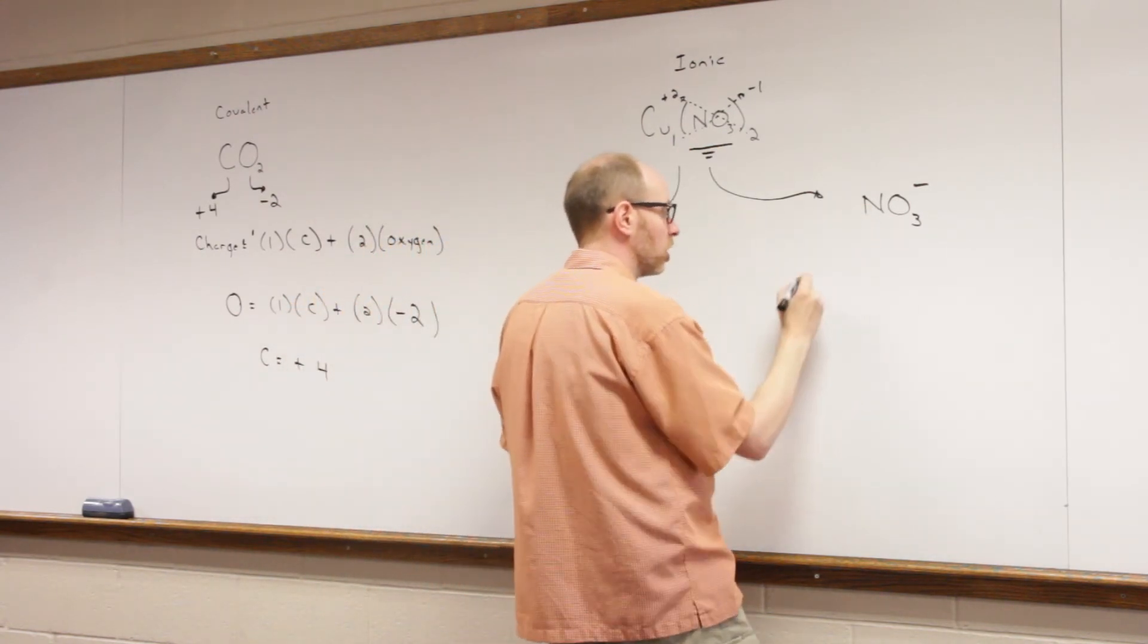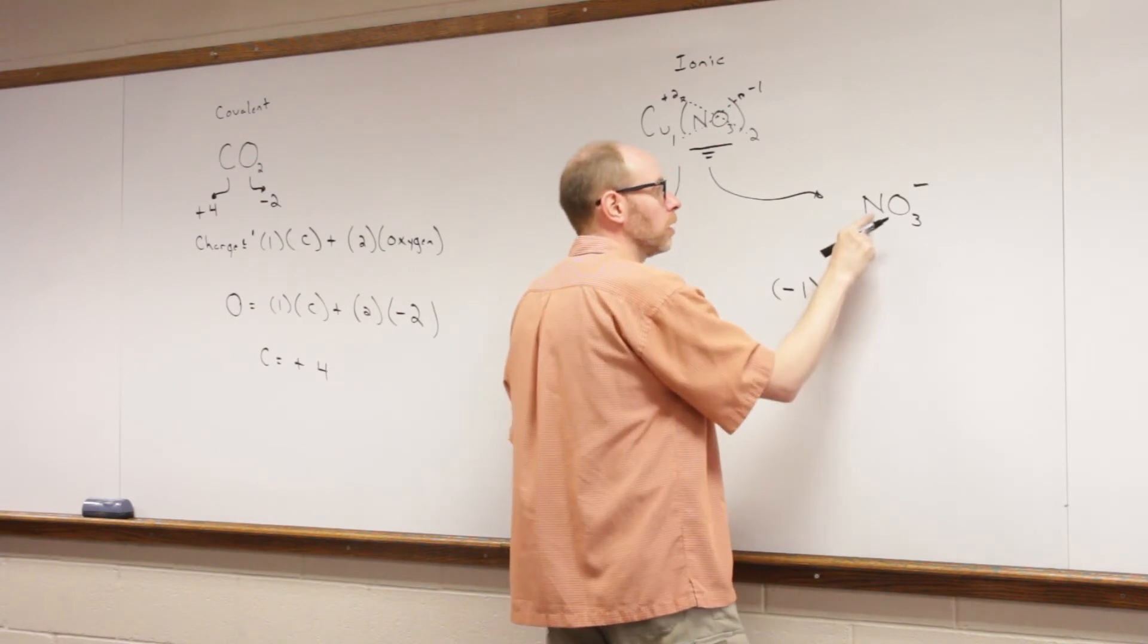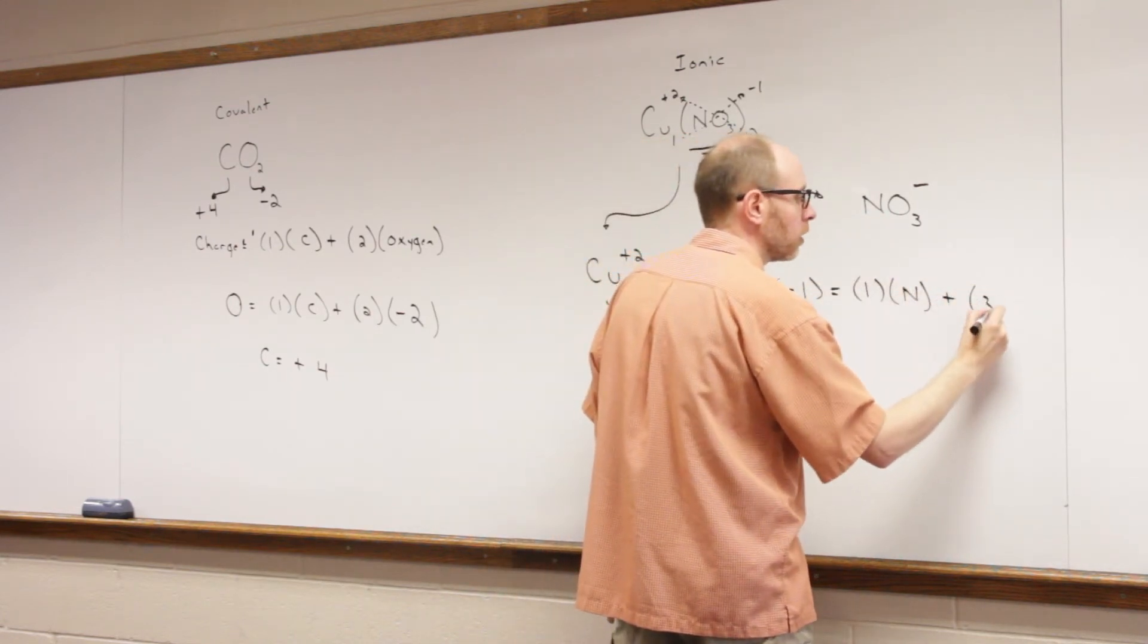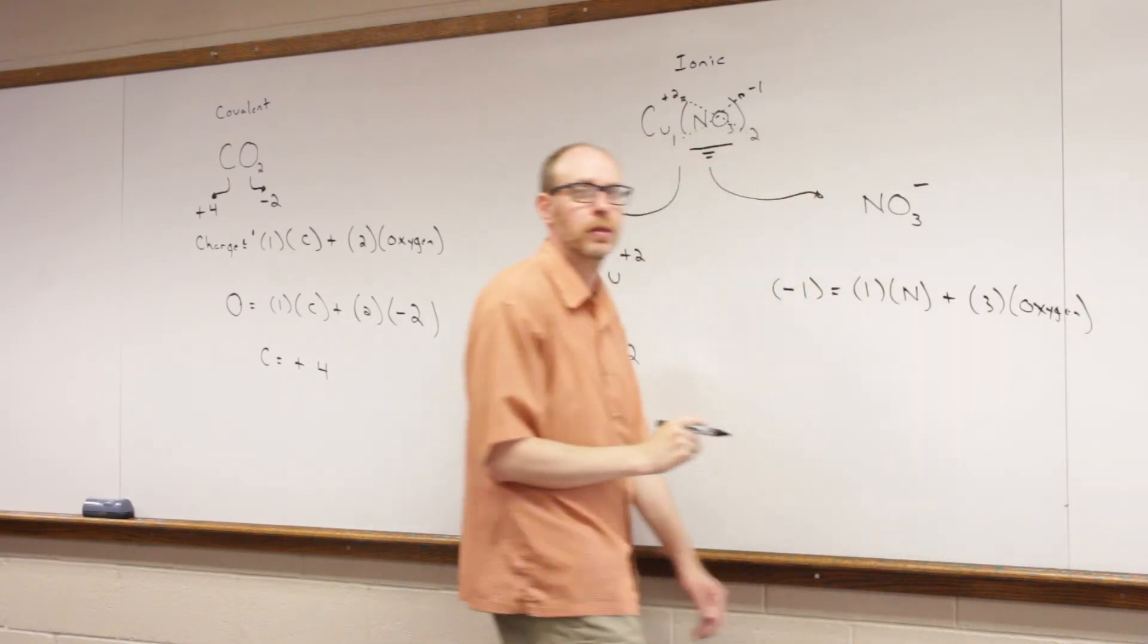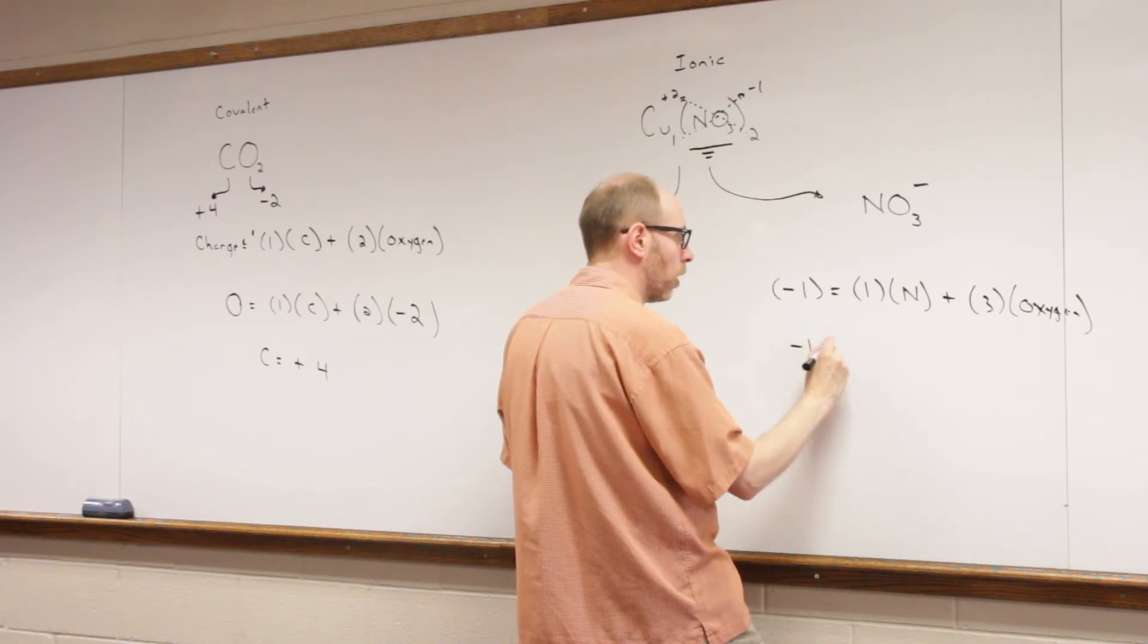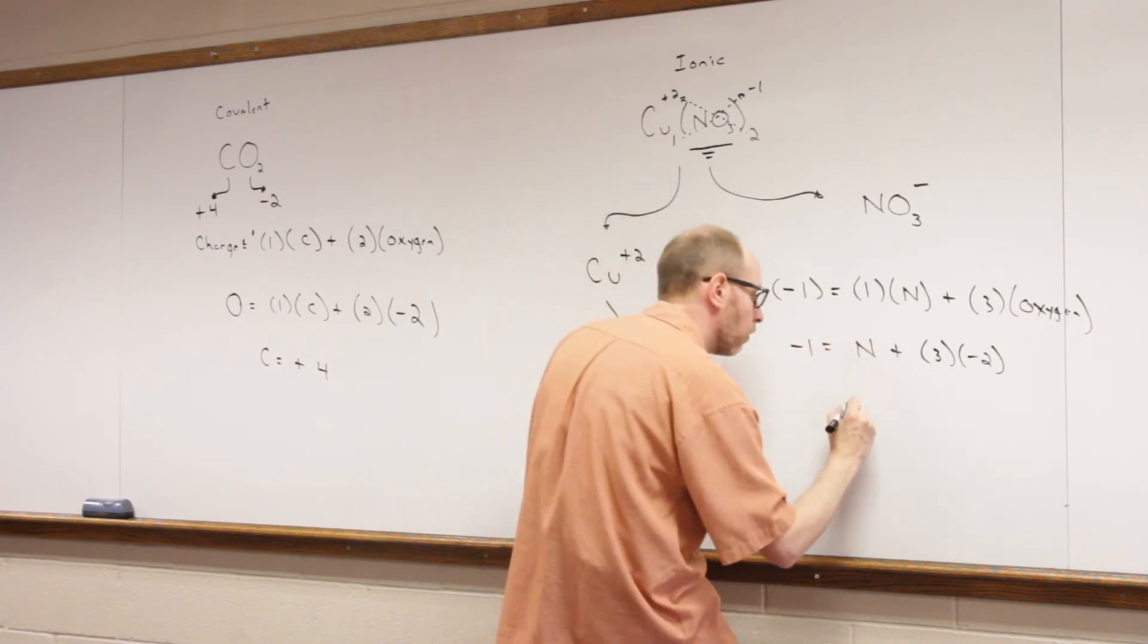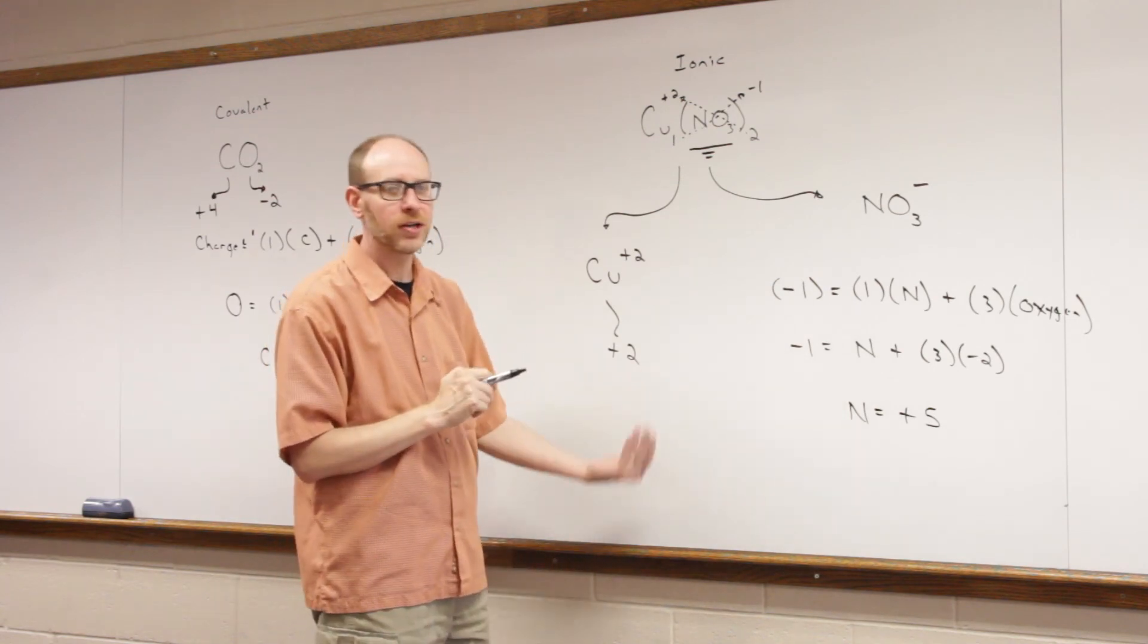So, in this case, we say the charge of that ion is minus 1, and that's equal to 1 times whatever nitrogen is, nitrogen, there's only one of them, plus 3 times whatever oxygen is. Remember we also said oxygen is always a minus 2, so minus 1 equals N plus 3 times a minus 2, because oxygen is always a minus 2 in the cases we're going to look at. And when you solve that, nitrogen should equal plus 5. This is the one that we looked at in class, so it should seem familiar to you.